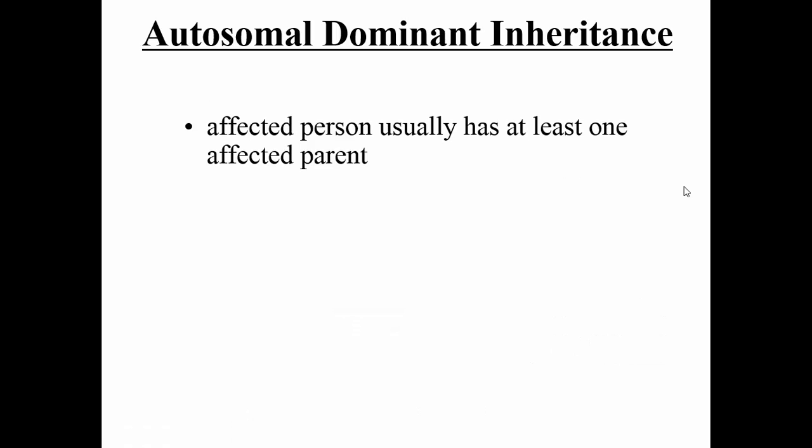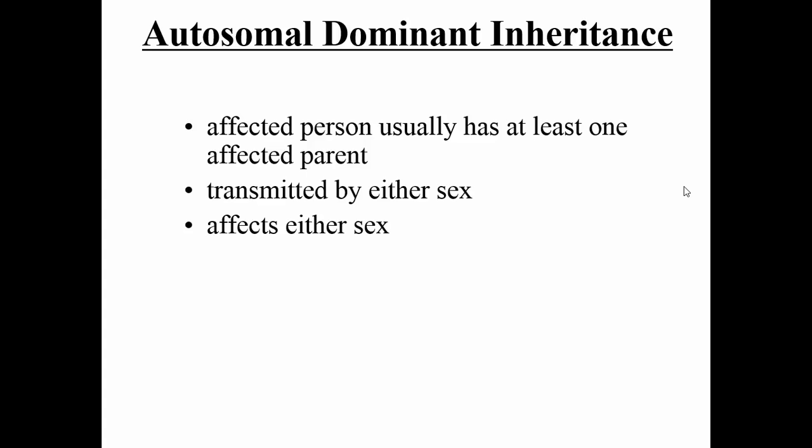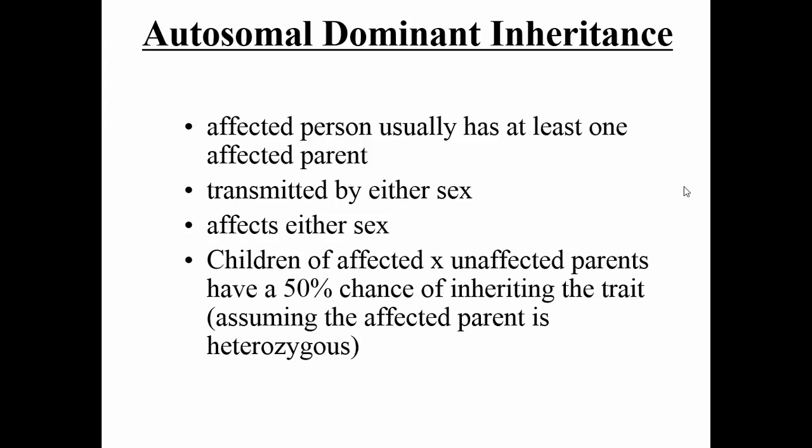To summarize the characteristics of autosomal dominant inheritance: an affected person usually has at least one affected parent. It's transmitted by either sex and affects either sex. And if we cross an affected and an unaffected parent — assuming the affected person is heterozygous — there's a 50% chance of inheriting the trait.